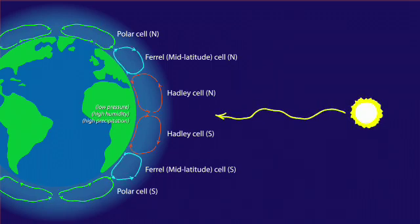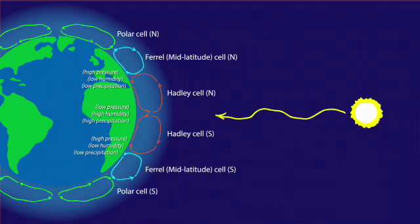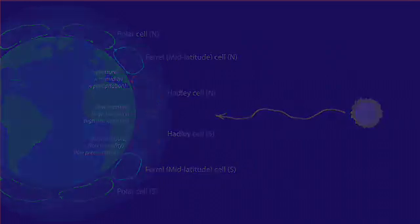At the mid-latitudes, where the Hadley cells and Ferrell cells meet, it is high barometric pressure that prevails. Humidity is low and rainfalls are sparse. This is why deserts worldwide tend to occur at the mid-latitudes.